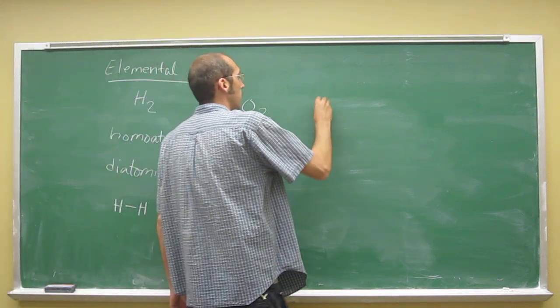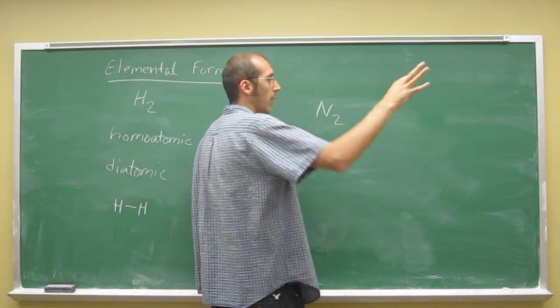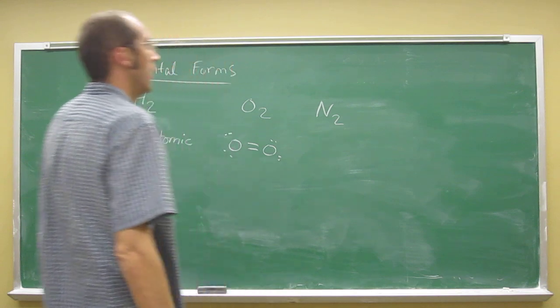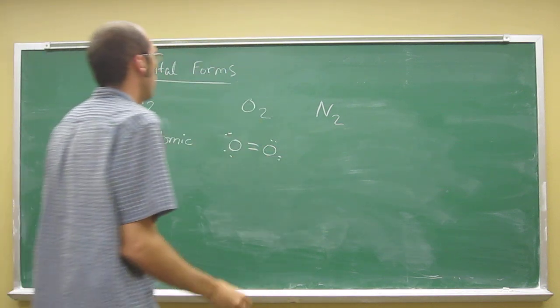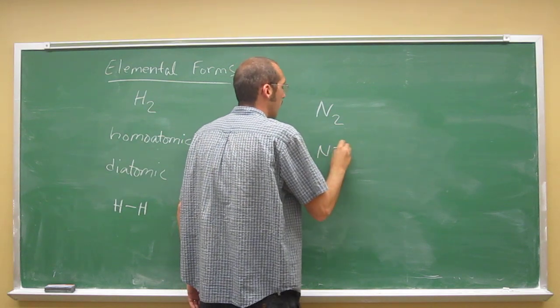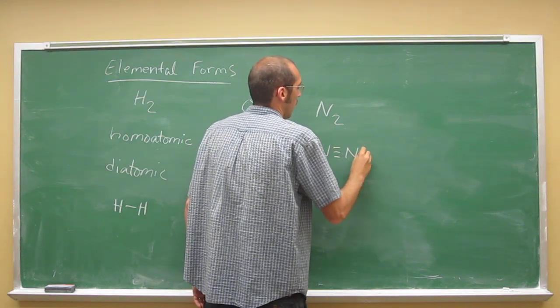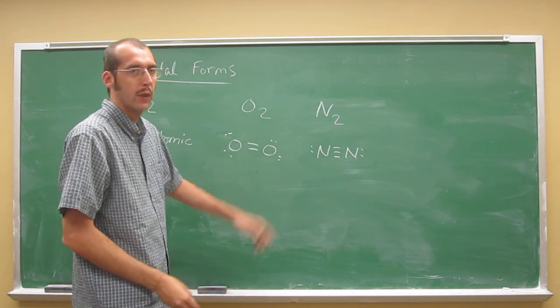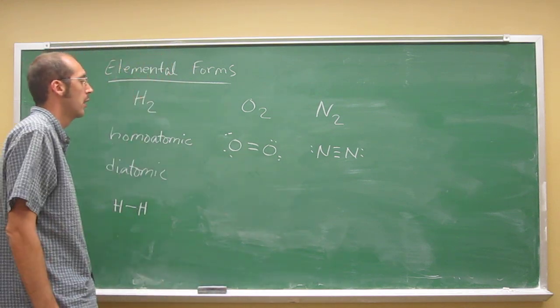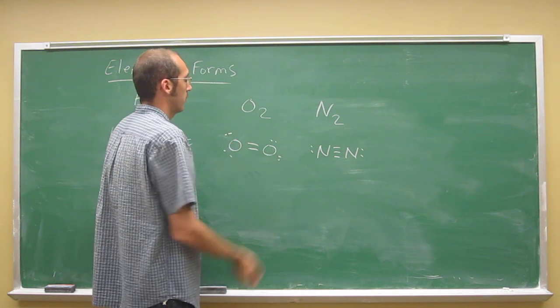Nitrogen is another common one. So if you go down the periodic table, you'll see oxygen, nitrogen. And we'll talk about these lines in between these atoms. So these are the atomic symbols, of course.